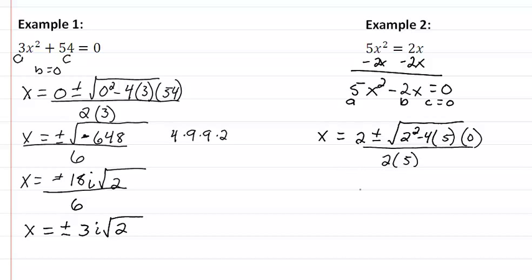So what we get then is x equals two plus or minus the square root of four, because this last part all disappears, all over ten. So we have x equal to two plus or minus two, all over ten.